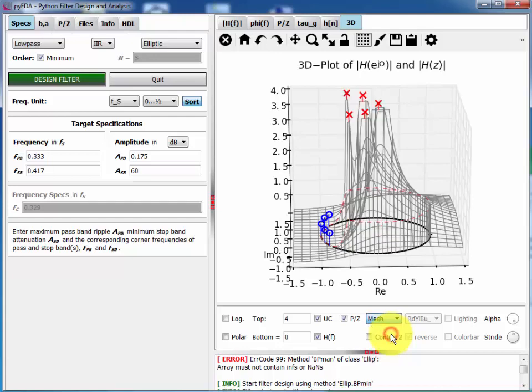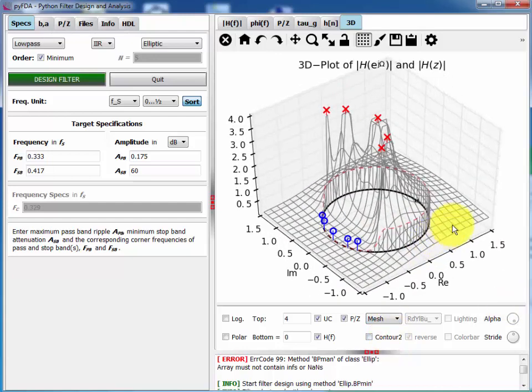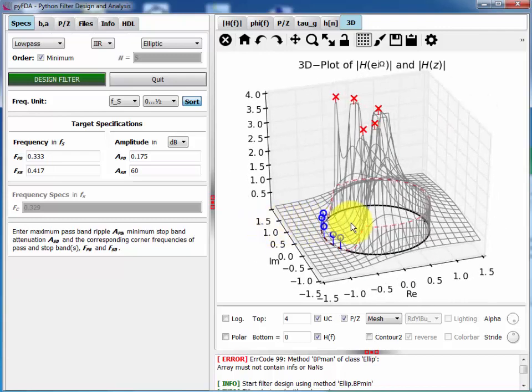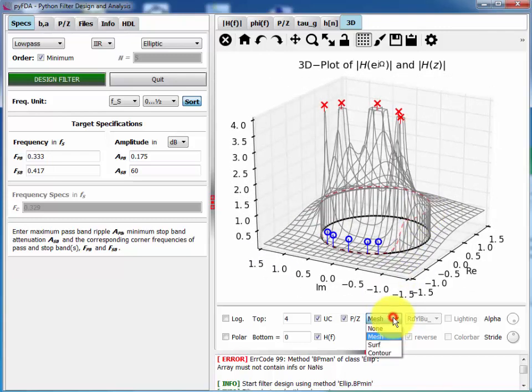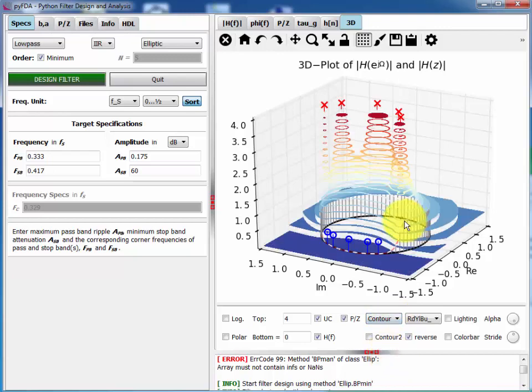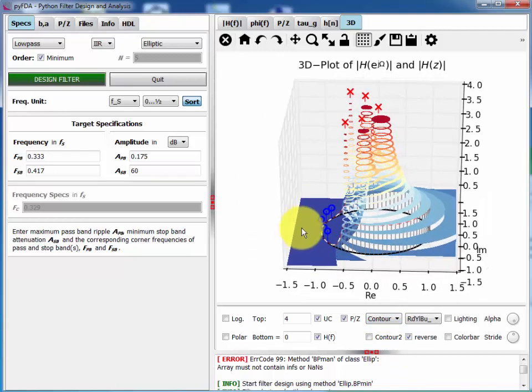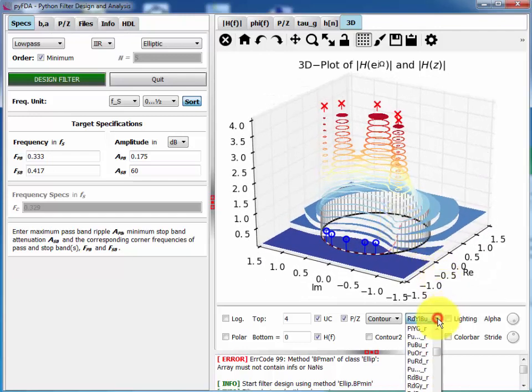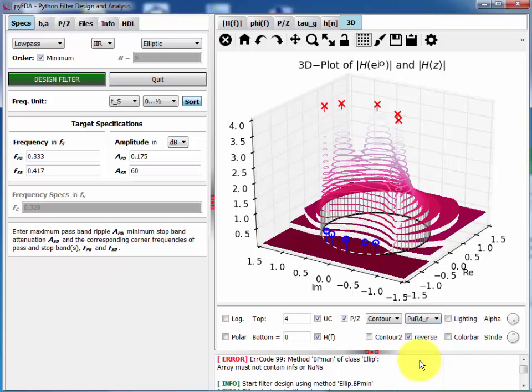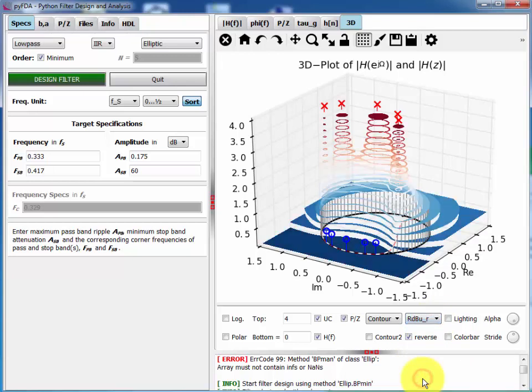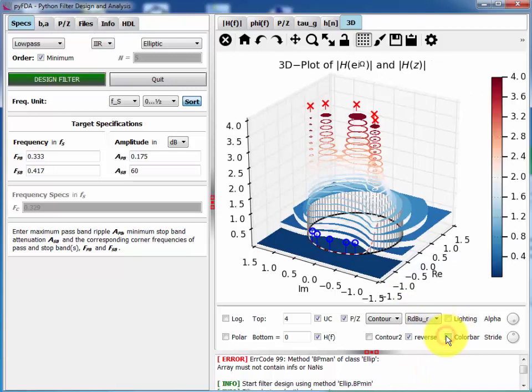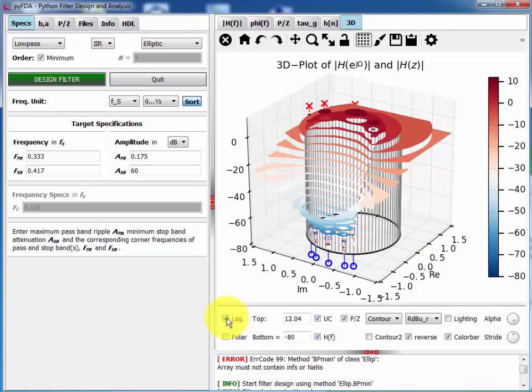If you'd like to have a 3D view, the mesh is the one that's fastest to draw, followed by the 3D contour plot. And with the contour and the surface plot, you can also select different color maps. You can add a color bar to see which color responds to which height. And usually for most filters it makes sense to select a logarithmic scale.